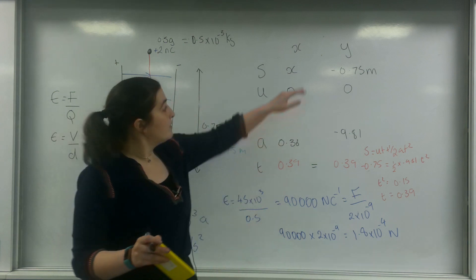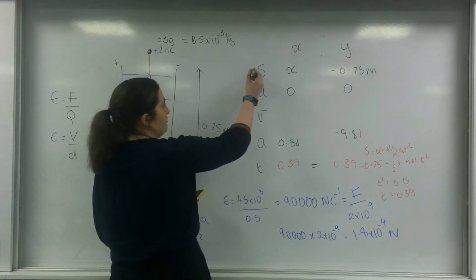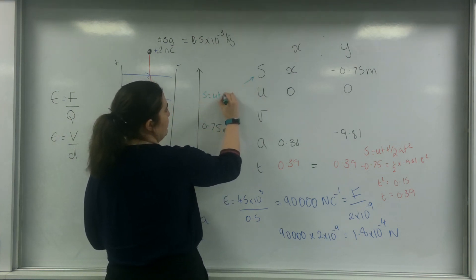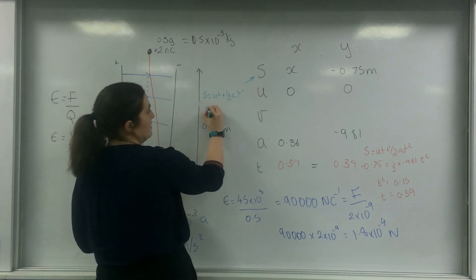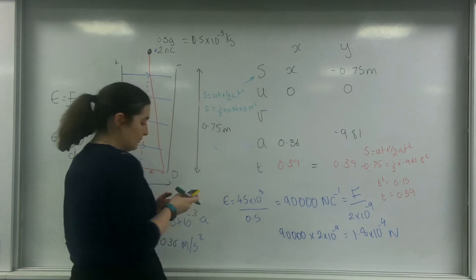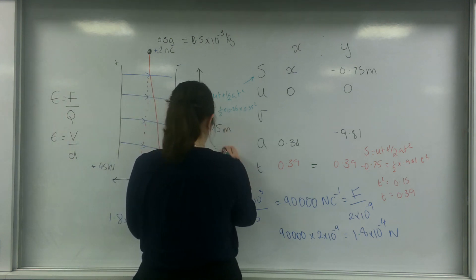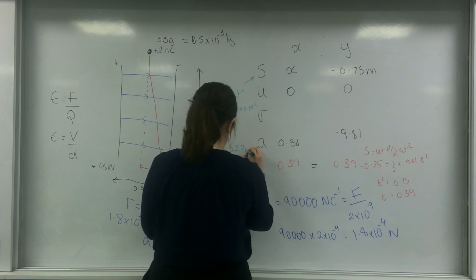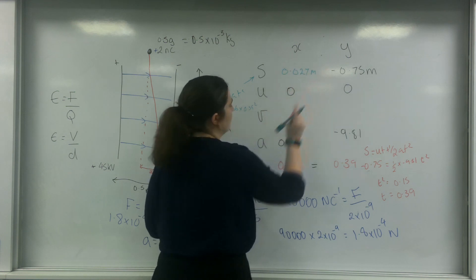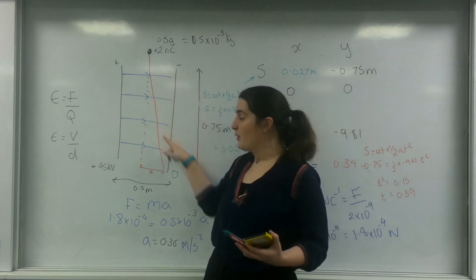My time is not going to change at all, because the y-axis has nothing to do with that electric field. So using S equals ut plus half at squared, with u equal to 0: S equals half times 0.36 times 0.39 squared — that's going to be about 2 centimetres. So this heavier object is not going to deflect as much.